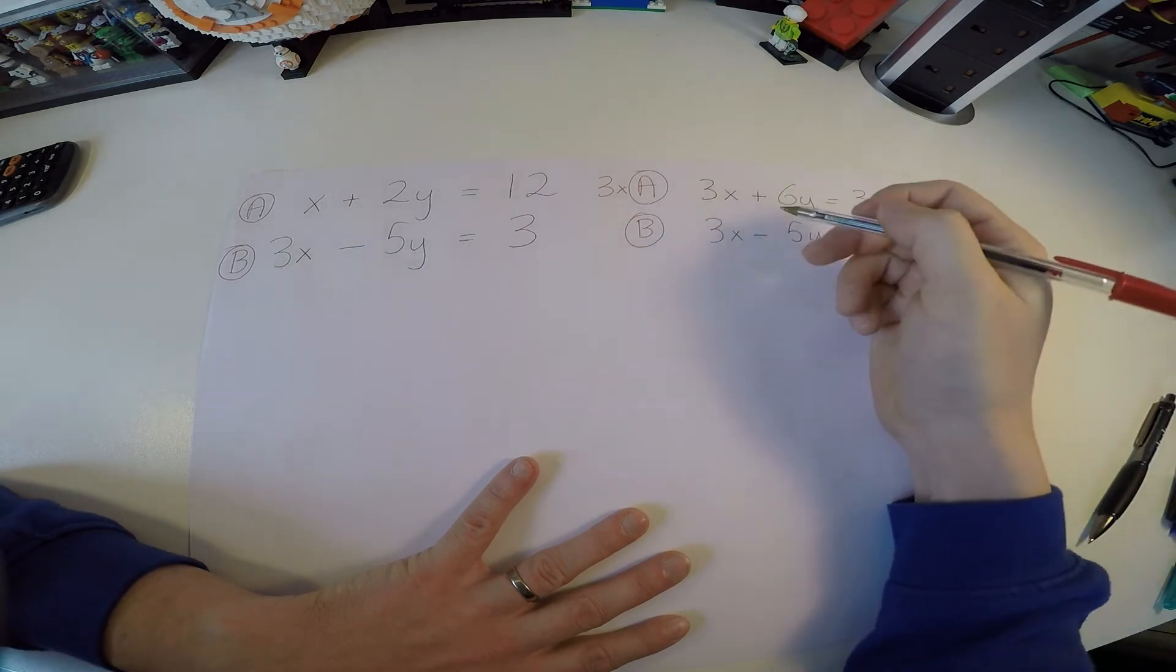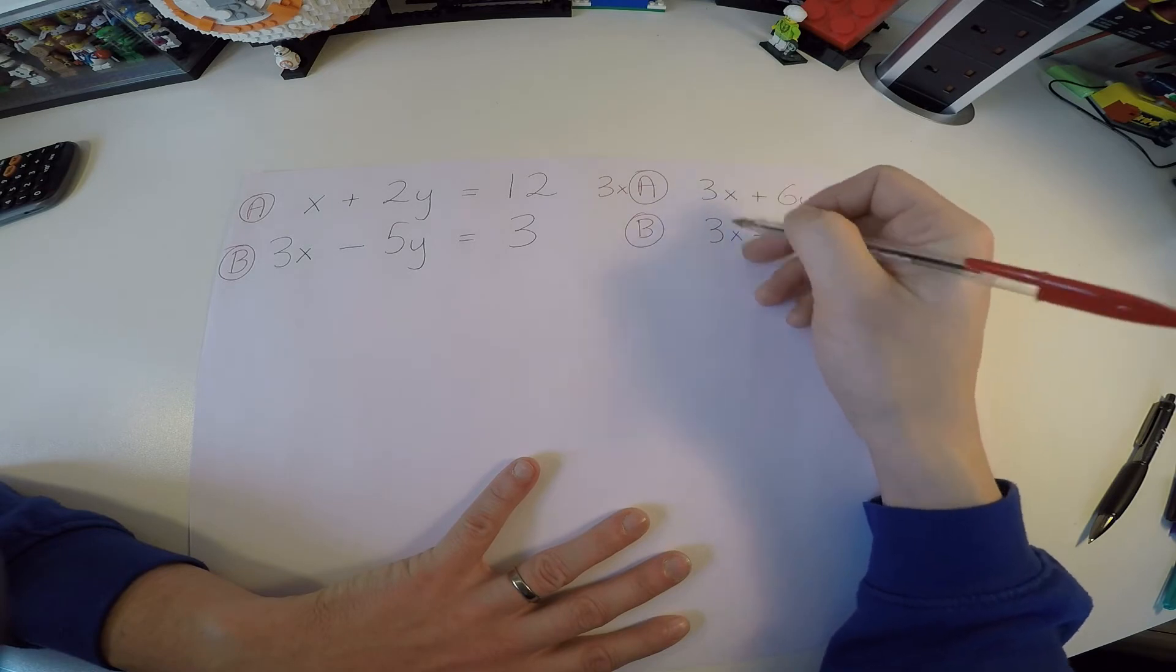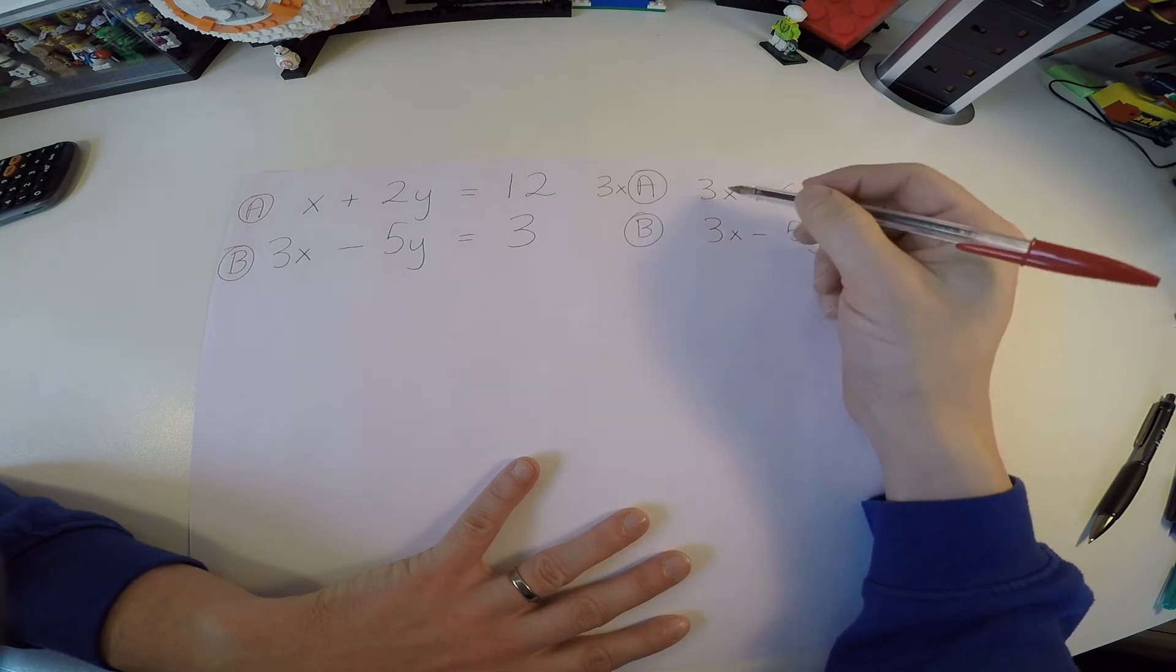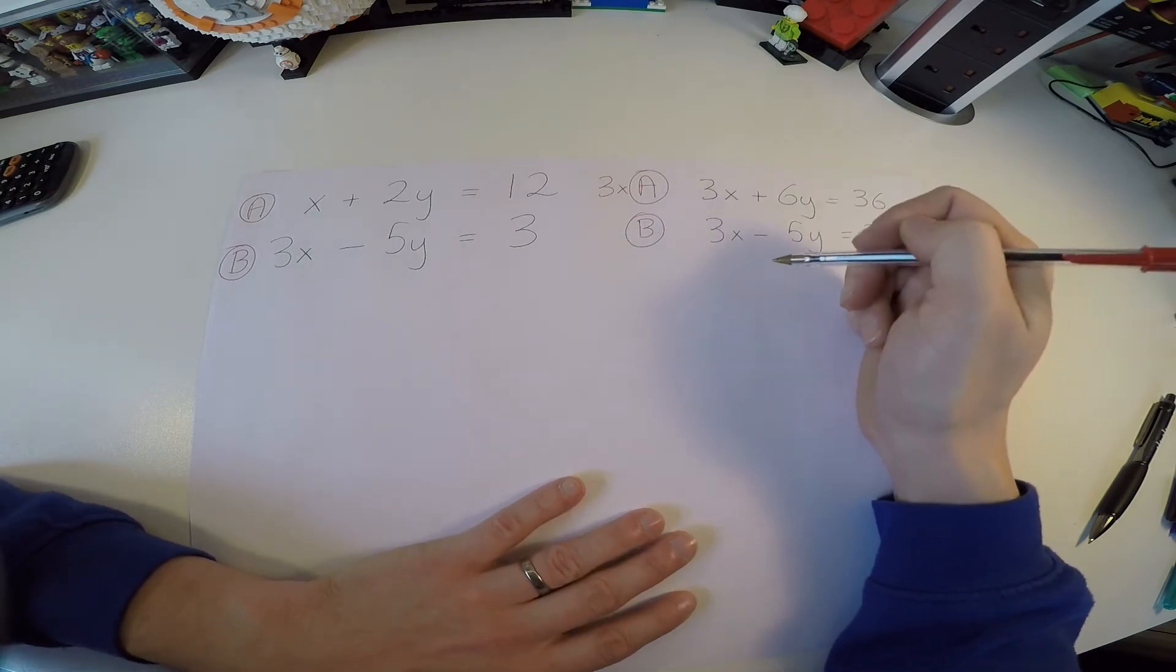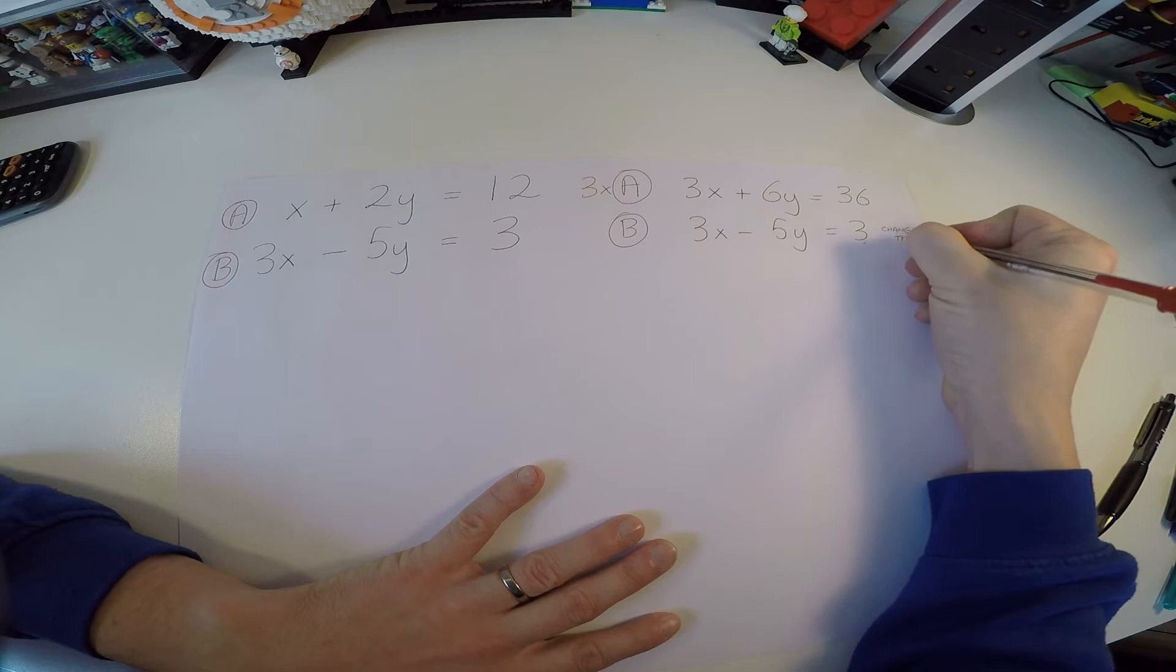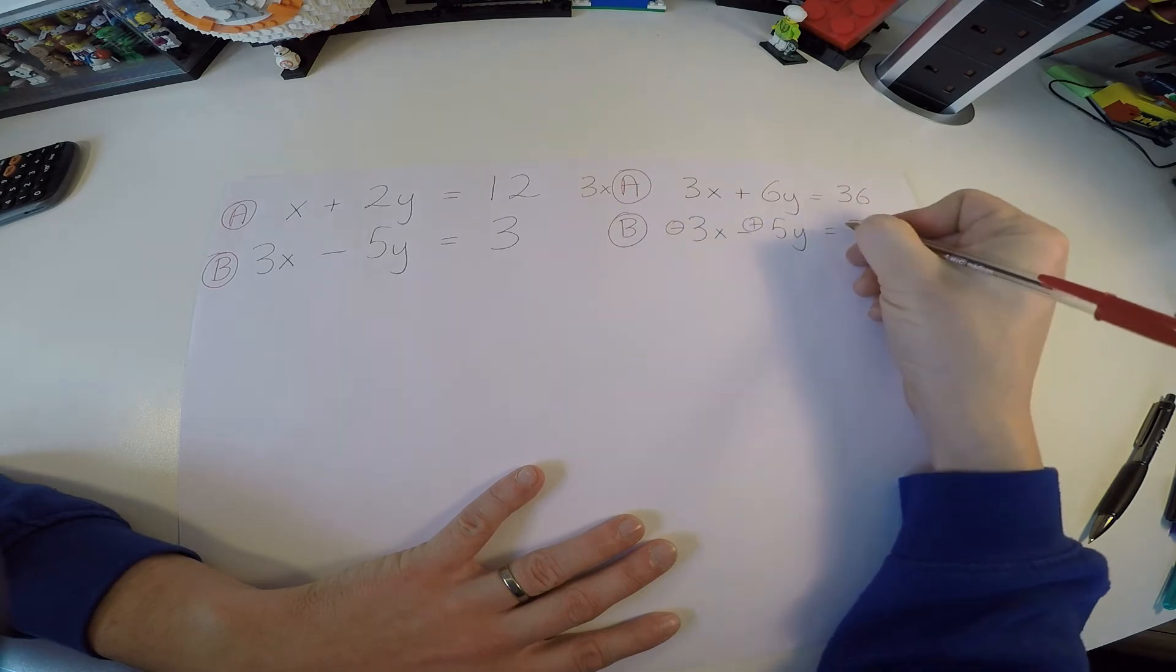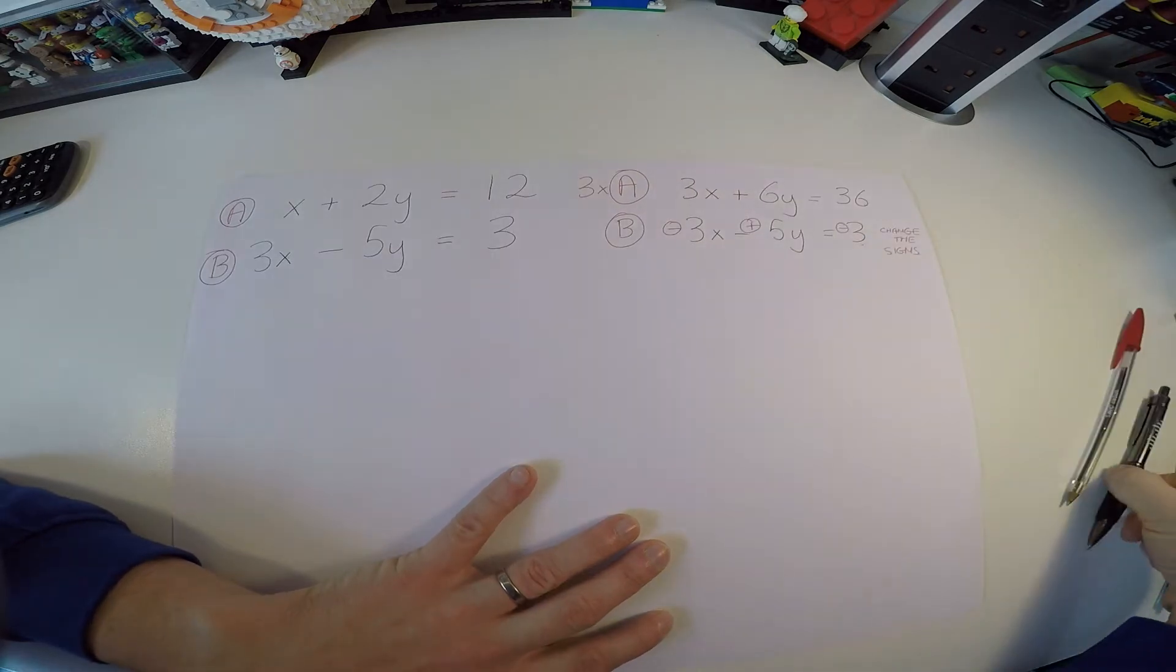Now the only thing is with b, they're the same sign. They need to be different signs in order to cancel. Like 3x and 3x is 6x. I want it to go to 0. So what I'll do is I'll change the signs. So let's change this to a minus. It means this goes to a plus. It means this goes to a minus.